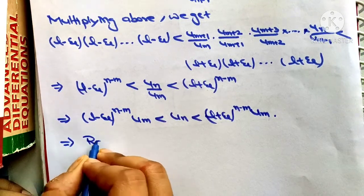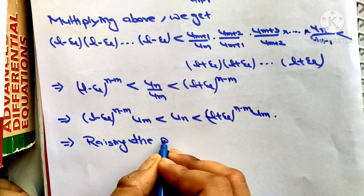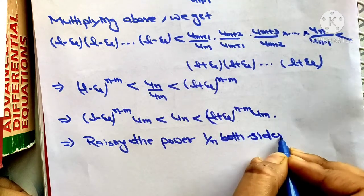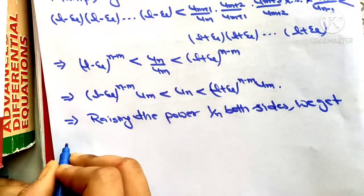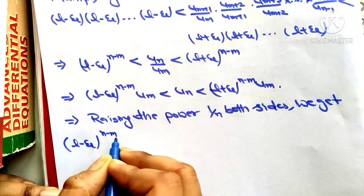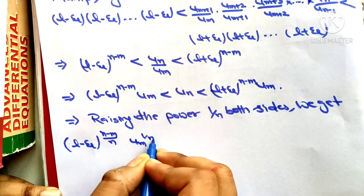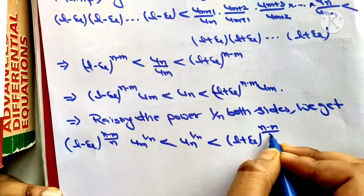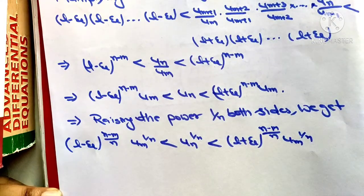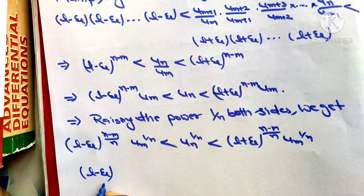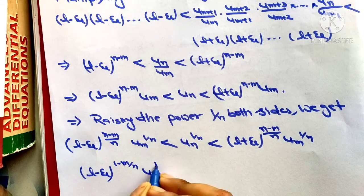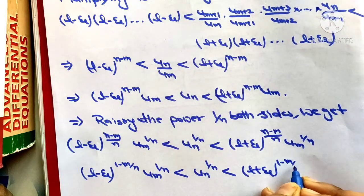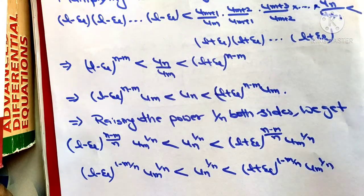Raising to the power 1/n on both sides, we get: (l minus epsilon)^{(n-m)/n} · a_m^{1/n} less than a_n^{1/n} less than (l plus epsilon)^{(n-m)/n} · a_m^{1/n}. This can be written as: (l minus epsilon)^{1 - m/n} · a_m^{1/n} less than a_n^{1/n} less than (l plus epsilon)^{1 - m/n} · a_m^{1/n}.